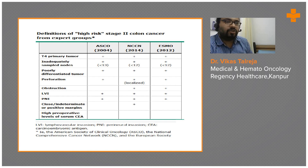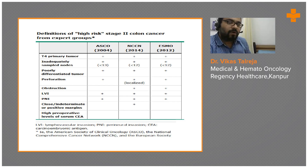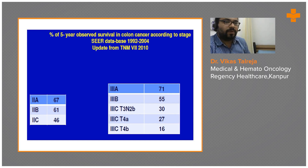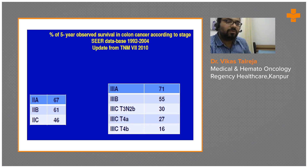For high-risk Stage 2, factors considered include MSI stability, initial obstruction, lymphovascular invasion, perineural invasion, T4 primary, adequate lymph node removal (whether less than or more than 13 nodes), and perforation — all guiding adjuvant chemotherapy decisions. Five-year observed survival by stage: Stage 2A — 67%; Stage 2B — approximately 61%; Stage 2C — approximately 46%; Stage 3A — 71%; Stage 3B — approximately 55%.